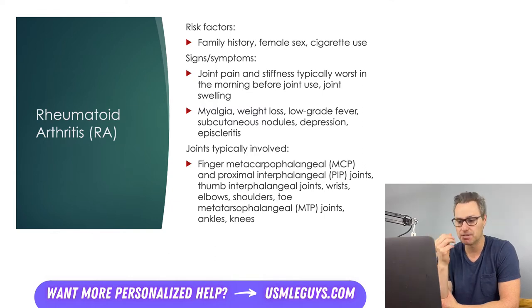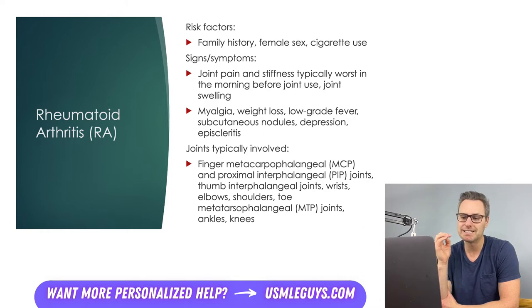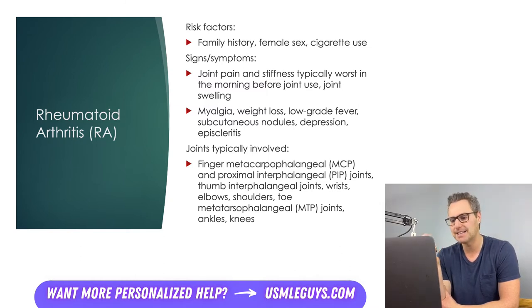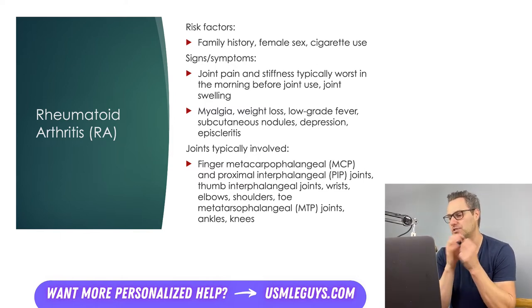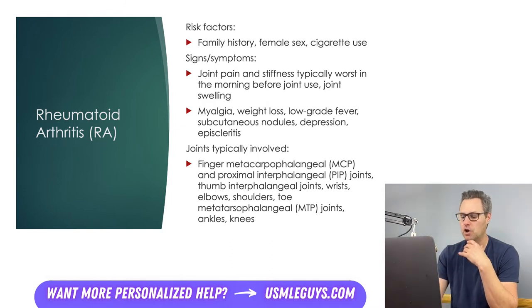Patients can also have symptoms outside of joint pain, including myalgias, weight loss, low-grade fever, nodules, depression, and even episcleritis. Subcutaneous nodules are a huge clue for RA. These nodules can range from marble-sized to golf ball-sized and are usually located in areas that experience mechanical pressure, such as the hands and elbows. They feel firm or doughy on palpation, are usually mobile, and can sometimes attach to subcutaneous tissues or tendons. The nodules can cause complications by compressing nearby tissues, nerves, or blood vessels.